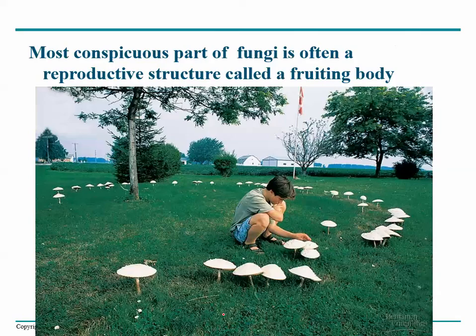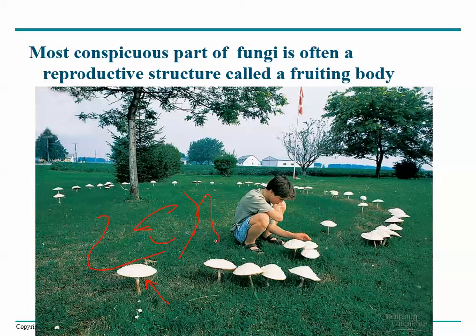The most conspicuous part of fungi is often a reproductive structure called a fruiting body. For example, this ring of mushrooms is a phenomenon called a fairy ring. But this is not really the mushroom — this is just the reproductive structure of the mushroom. The real fungus is found in all these little strands underneath the ground, invisible because they're beneath the surface, and there are a gazillion of them.